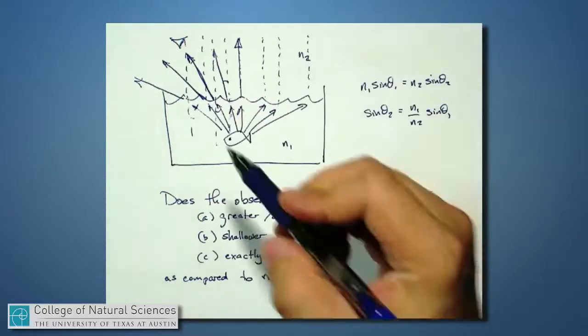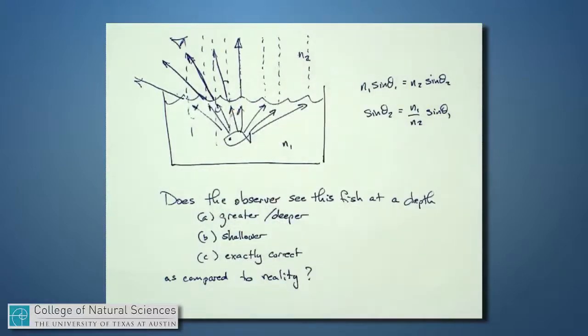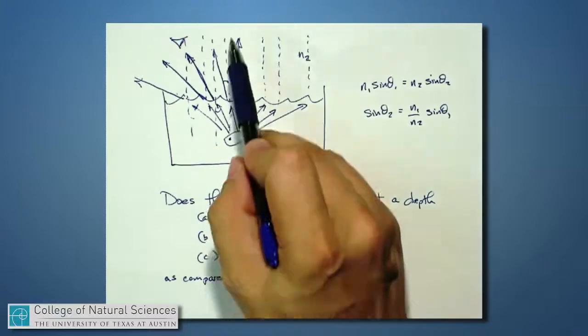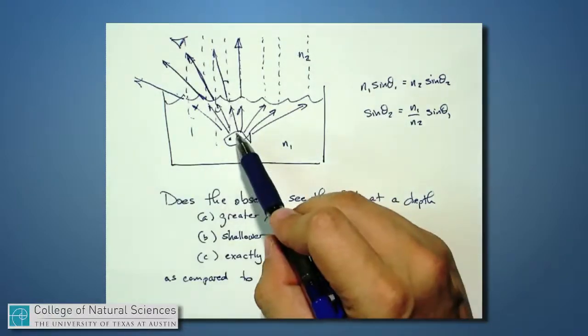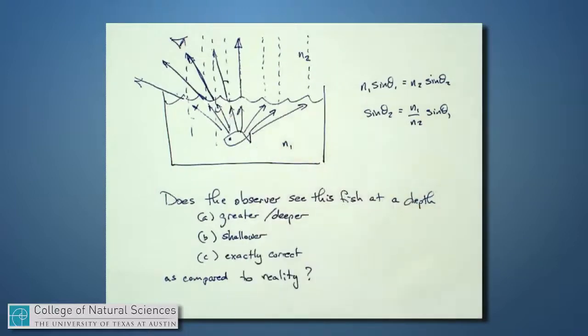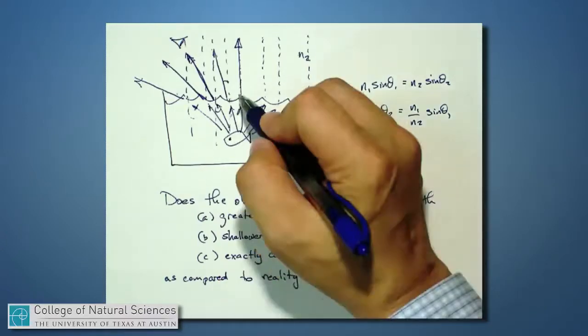So the light rays that are leaving the water are spread out. It's true that the light rays coming off the fish were already spreading out, but they're spreading out even more as a result of using Snell's law to predict how light refracts.